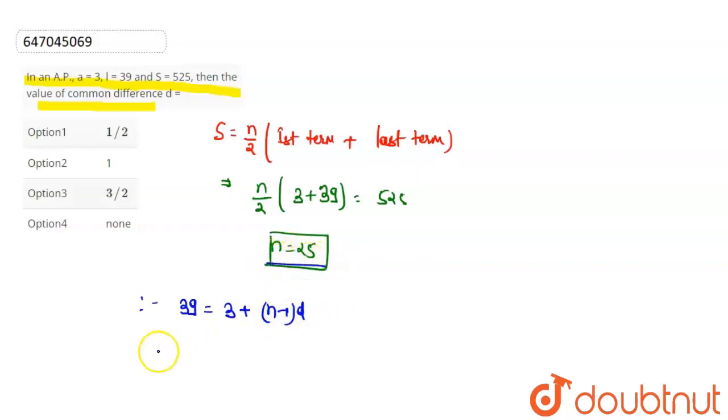We know n is 25 here, so putting that, 36 equals 24 into D. So here the value of D comes out to be 3 by 2. Common difference is 3 by 2. Answer is option third.